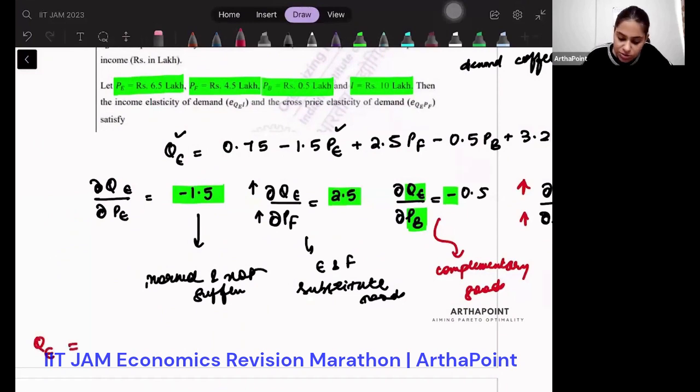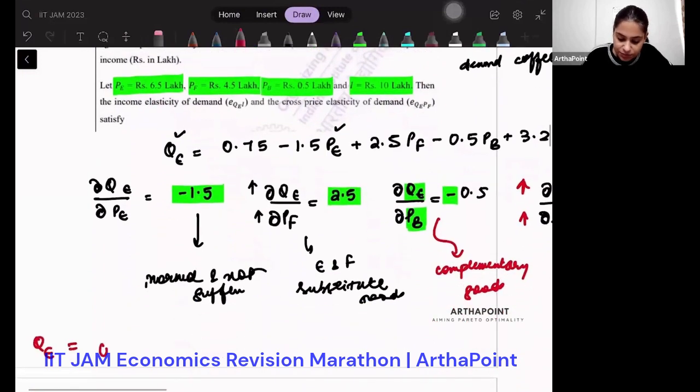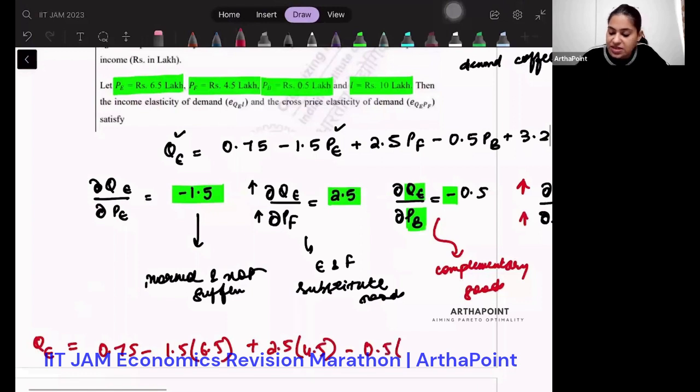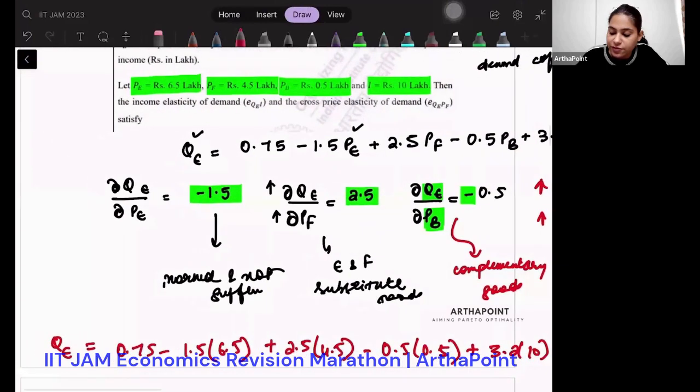After you put down these values, let's do that. 0.75 minus 1.5 into 6.5—do it with me—plus 2.5 into 4.5, minus 0.5 into 0.5, plus 3.2 into 10. This gave me 34. So we have got the value of the demand for QE.